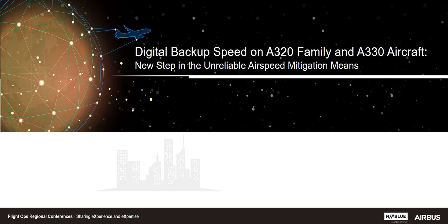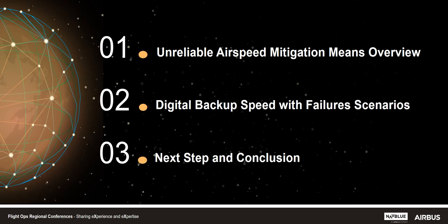Welcome everybody, and thank you for attending this presentation. The aim of the following slides is to present the new step in the Unreliable ASP mitigation means, also called the Digital Backup Speed, and their associated monitoring and displays on A320 family and A330 aircraft. First, I will provide an overview of the Unreliable ASP mitigation means and remind you of the first step, also known as the reversible BUS. Then I will show you the newer step called the Digital Backup Speed and use two failure scenarios to illustrate the benefits of this function. Finally, I will do the synthesis.